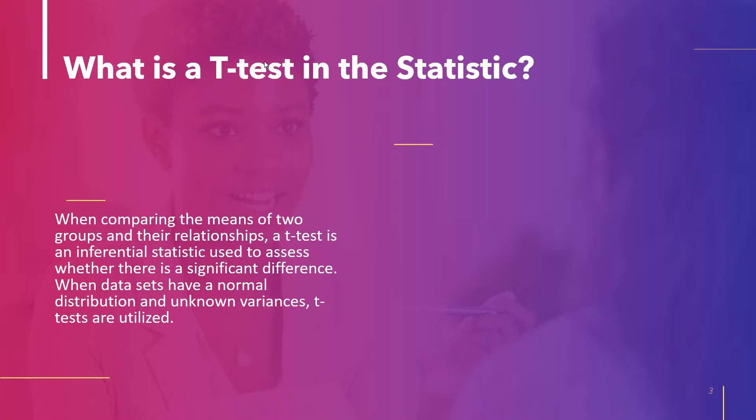The t-test establishes the problem statement mathematically by taking a sample from each of the two sets. The two means being equal is taken as the null hypothesis. Three essential data values are needed to calculate a t-test: the mean difference, the standard deviation of each group, and the total number of data values for each group, as well as the difference between the mean values from each dataset.